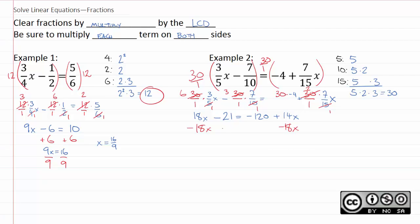If you do it right, you get the same answer either way, so it doesn't make a tremendous difference. Negative twenty one equals negative one twenty minus four x.